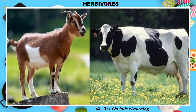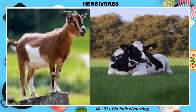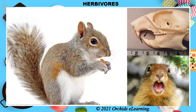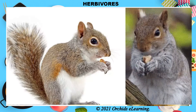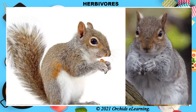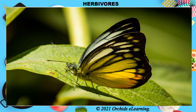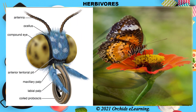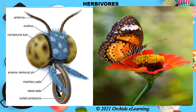Cow and goat have the ability to bring back previously swallowed food to the mouth for chewing it a second time. Squirrels have a pair of broad, sharp-edged front teeth called incisors in each jaw; they use these teeth to gnaw food items such as nuts. Insects such as butterflies do not need to chew their food — they have mouthparts shaped like a straw to suck nectar from flowers.